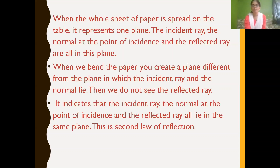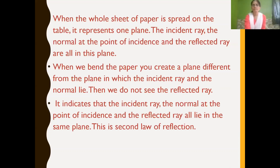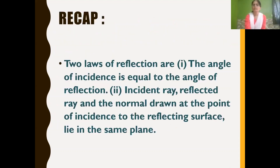When we bend the paper, we create a plane different from the plane in which the incident ray and the normal lie — that is why we do not see the reflected ray. From this activity we can understand that the incident ray, the normal, and the reflected ray are all lying in the same plane. This is the second law of reflection.